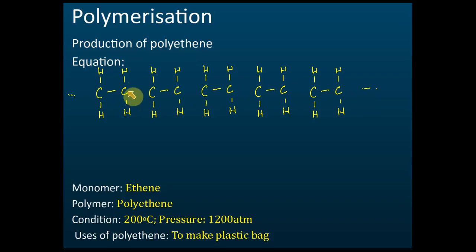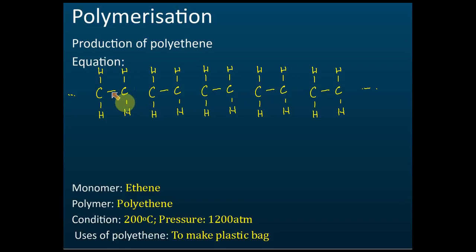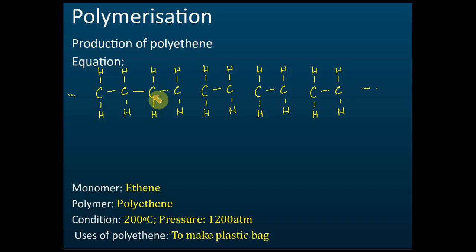After the double bond is broken, let's check the number of covalent bonds for each carbon. We have one, two, three — this one also one, two, three. Every carbon should have four covalent bonds, which means we can add something into this carbon because it only has three covalent bonds. The only thing present is another alkene, which also lacks one covalent bond.